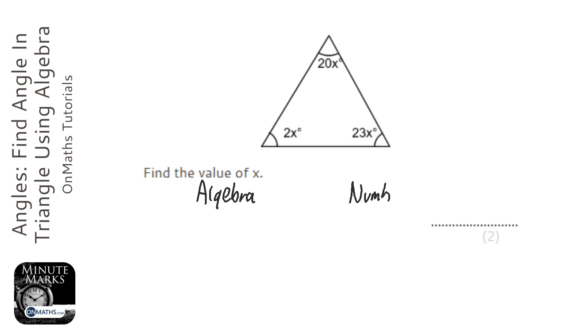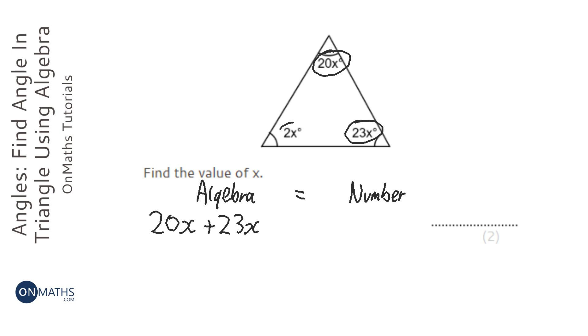In algebra it is 20x plus 23x plus 2x, and as a number we know angles in a triangle add up to 180 degrees.